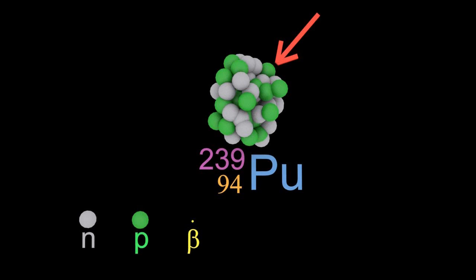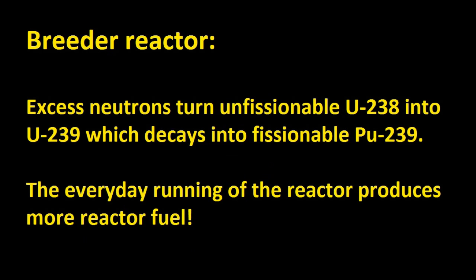Ah, plutonium. You can use that as fuel for the reactor or to make nuclear bombs. So this is a breeder reactor. Excess neutrons turn unfissionable uranium-238 into 239, and then that decays into fissionable plutonium-239. The everyday running of the reactor produces more reactor fuel. No wonder this is so tempting for the nuclear industry. You can make, in some cases, more fuel than you actually use. Interesting, eh?